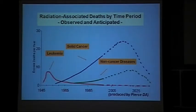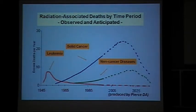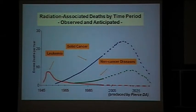Regarding temporal patterns, we observed excess leukemia in early years after the bombings. Excess leukemia started about two years after the bombings and then gradually decreased, but has not disappeared yet. For solid cancers, the excess started to rise somewhat later, like 10 to 15 years after the bombings, and is still rising even today.